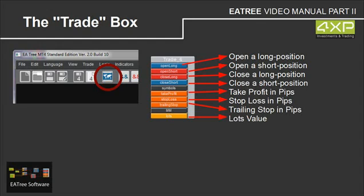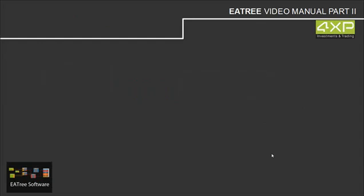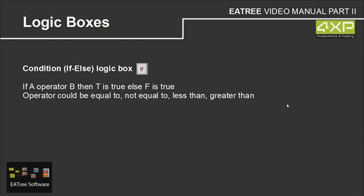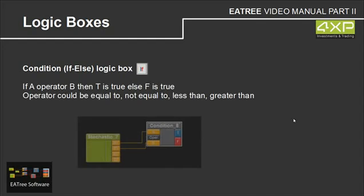Now we can start with the logic boxes. The first one we talk about is the condition if-else box. We can find it here with the button 'if'. The logic behind this box is: if A operator B, then T is true, else F is true. The operator could be equal to, not equal to, less than, greater than, etc. Here is an example.